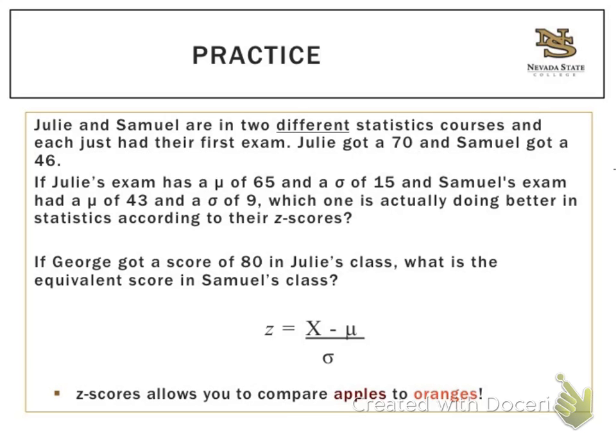So we now know that Julie's exam has a mean of 65 and a standard deviation of 15, while Samuel's exam has a mean of 43 and a standard deviation of 9. So the question is which one is actually doing better in statistics according to their z-scores?